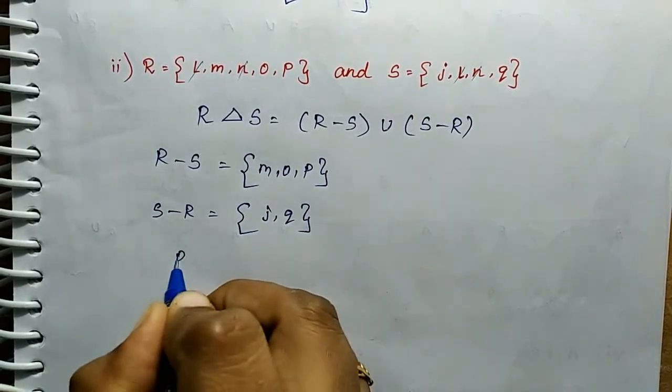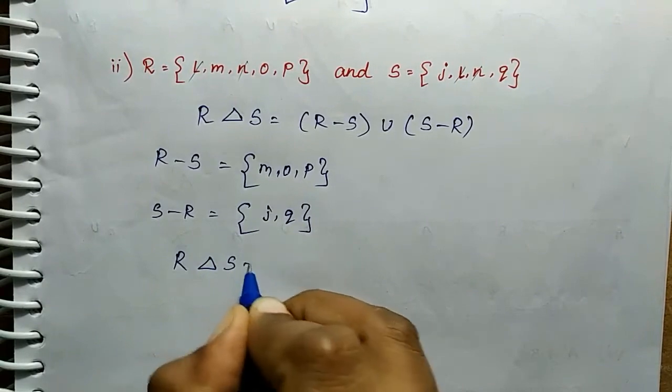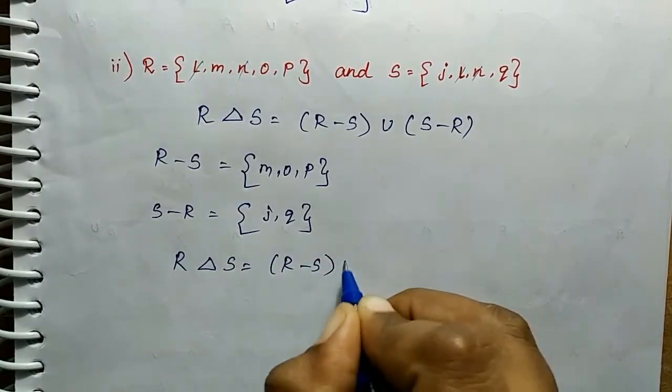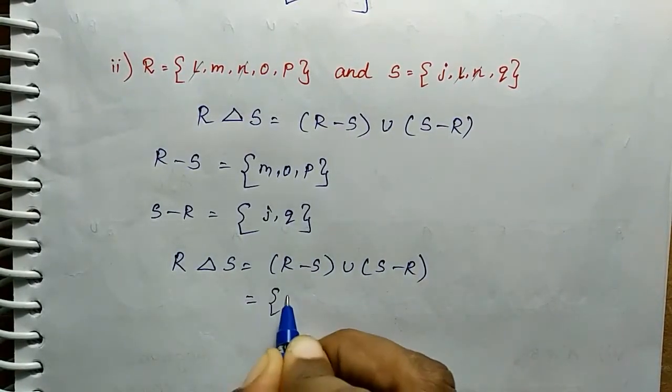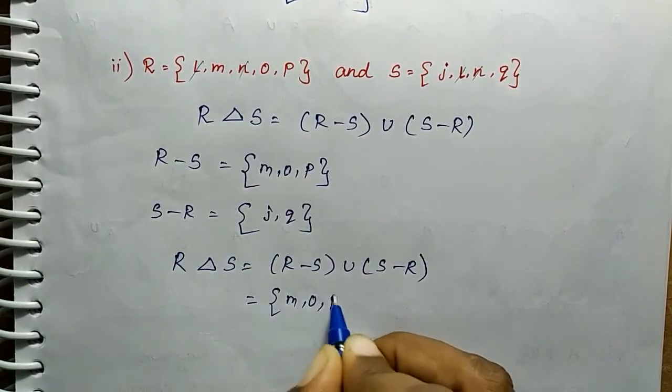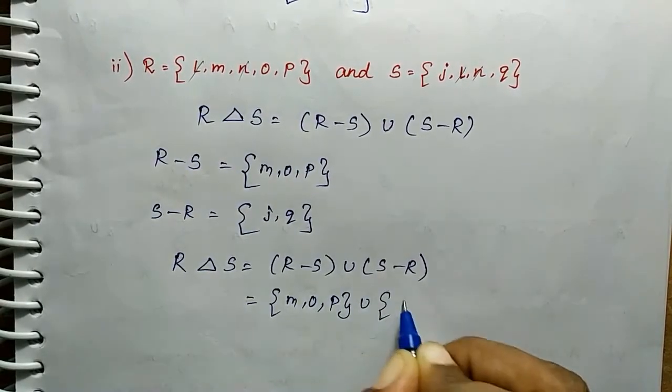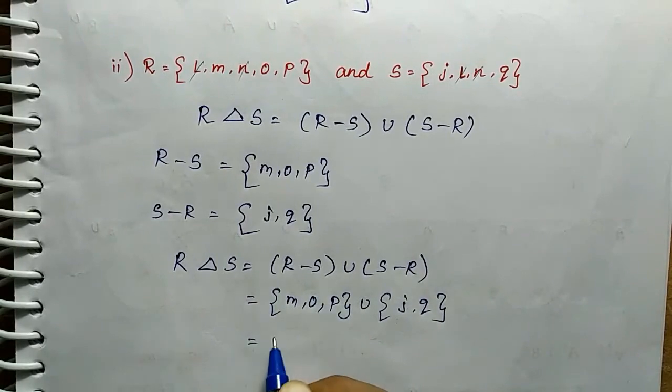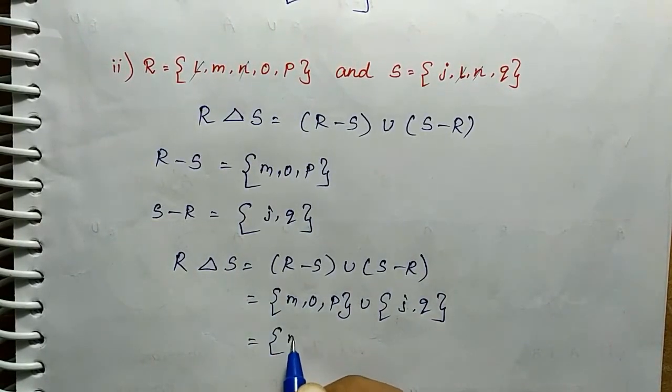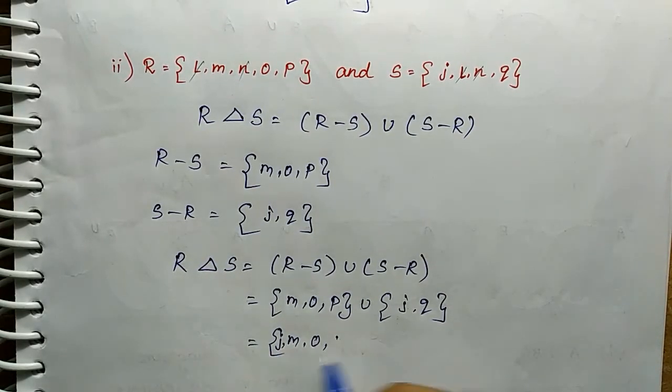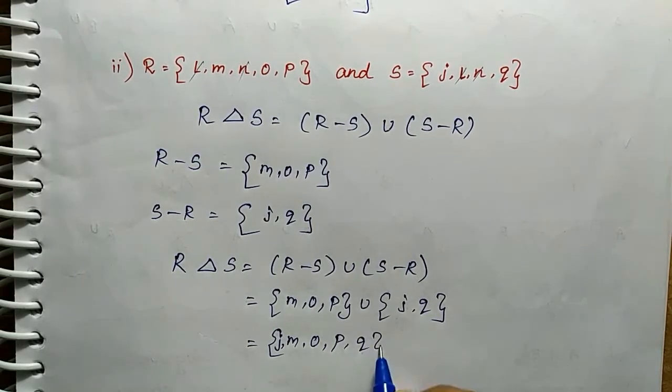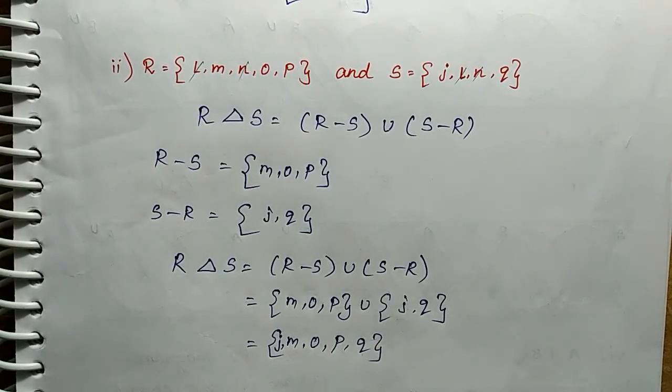So R symmetric S, the format is R minus S union S minus R. So we join these values: M, O, P union J, Q. So the values are joined: first J, M, O, P, then last Q. So in order: J, M, O, P, Q. Ok.